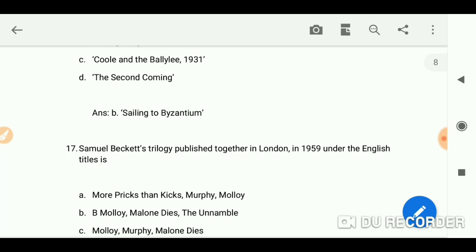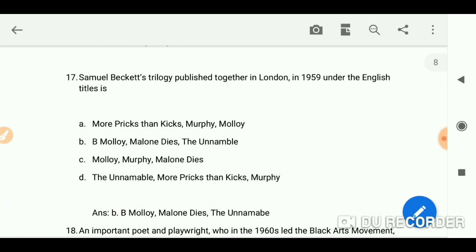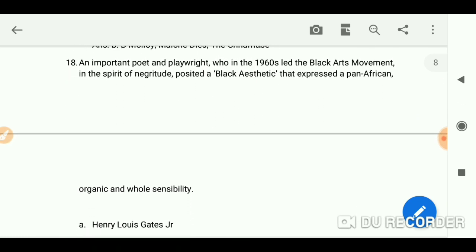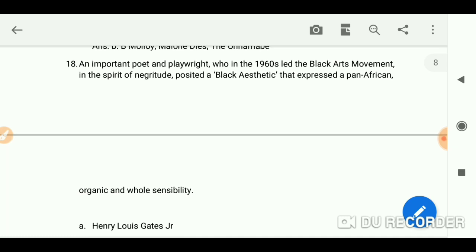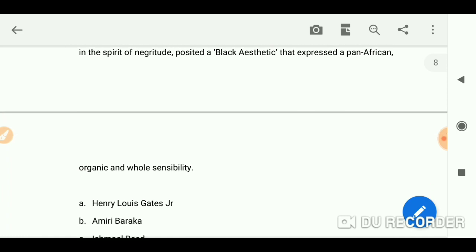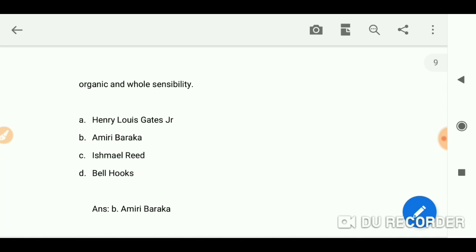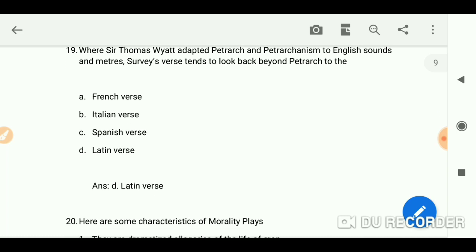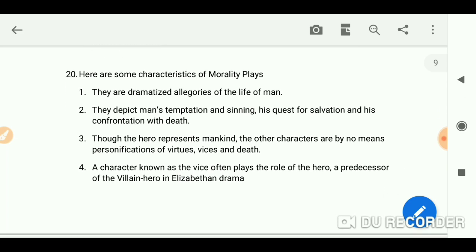Samuel Beckett's trilogy published together in London in 1959 under the English titles: Molloy, Malone Dies, The Unnameable. An important poet and playwright who in the 1960s led the Black Arts Movement in the spirit of black nationalism, posited a black aesthetic that expressed a pan-American organic and whole sensibility: Amiri Baraka. Where Sir Thomas Wyatt adapted Petrarch and Petrarchanism to English sound and meter, Surrey's words tend to look back beyond Petrarch to the answer is Latin words.